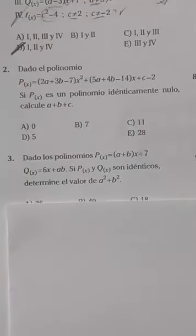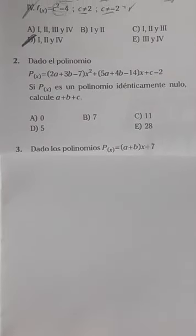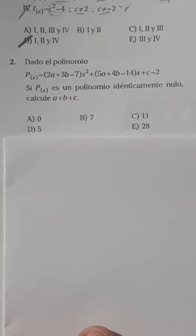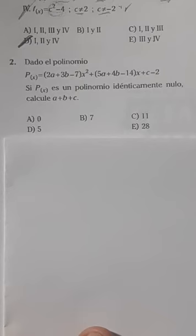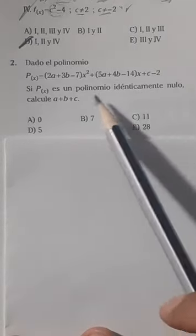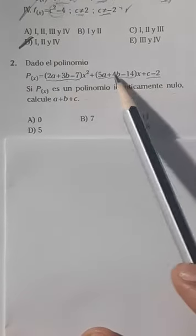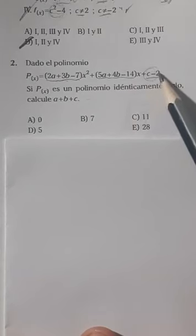Vamos con el problema número 2. ¿Cuál sería la respuesta ahí, muchachos? Te están diciendo que se tiene un polinomio idénticamente nulo. Esta es resolución de los problemas tanto de la parte domiciliaria como práctica dirigida del anual virtual de la Academia César Vallejo del año 2020. A ti te están diciendo A más B más C. En este caso, los coeficientes tienen que valer 0 cada uno de ellos.